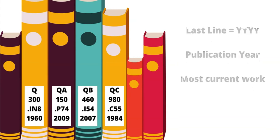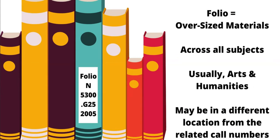Oversized items will have the term folio included at the top of the call number. While folios occur across all subject areas, they most typically are seen within the arts and humanities. When noting your call number, be sure to see if it indicates that it is folio or oversized, as it may be located in a different part of the library.